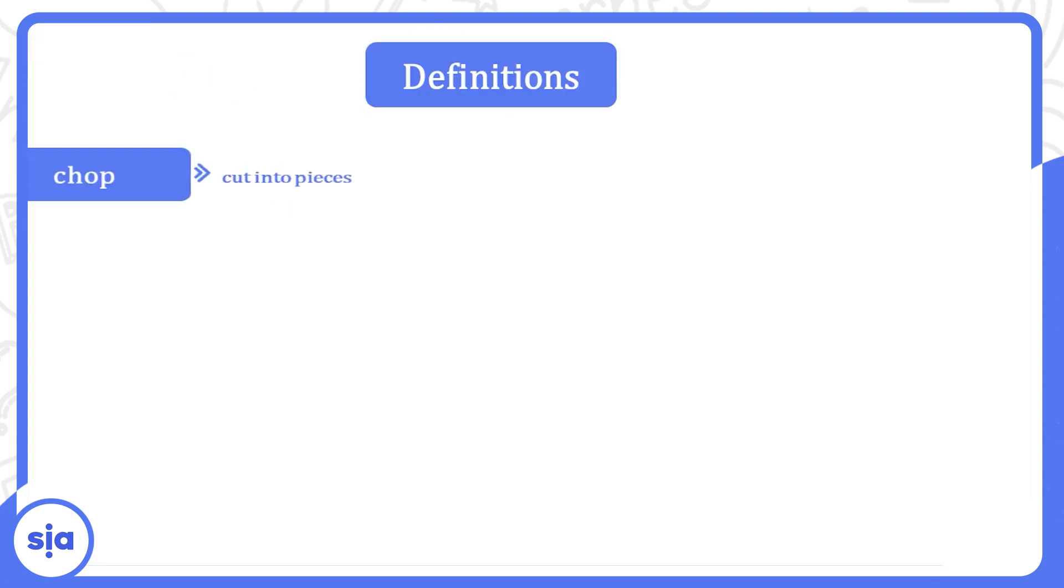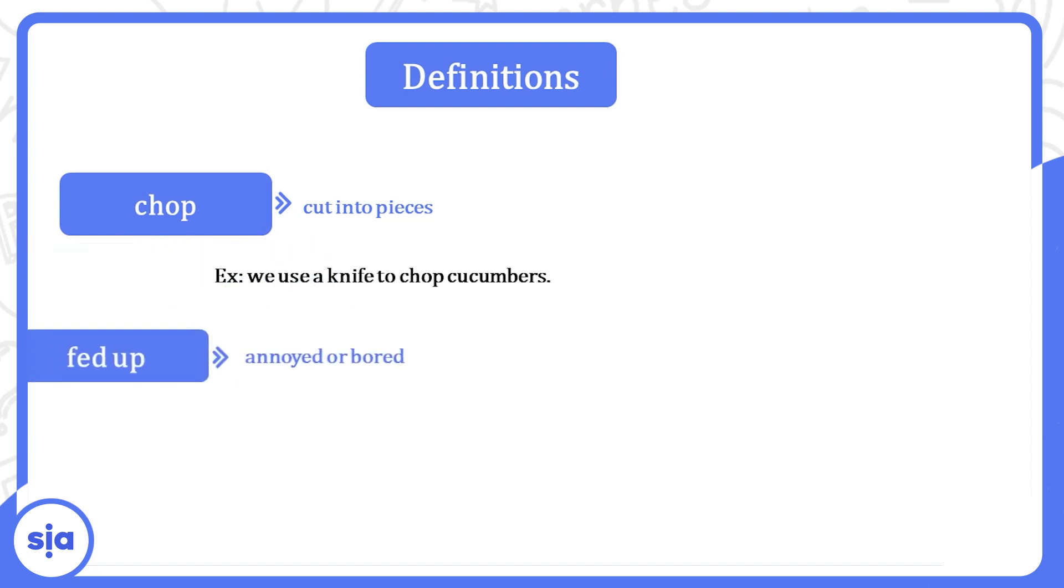The first one is chop. Chop is a verb. اللي بنا هو مش shop. هو chop. Chop معناها cut into pieces. يقطع. We use a knife to chop cucumbers. إحنا بنستخدم السكين عشان نقطع الخيار.